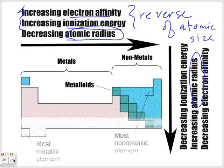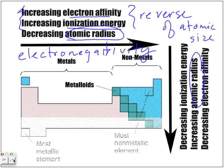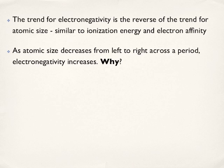Electronegativity is no different — it is also the reverse of the atomic size. The trend for electronegativity is the reverse of the trend for atomic size, similar to ionization energy and electron affinity. So as the atomic size decreases from left to right across the period, electronegativity increases.